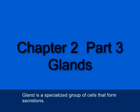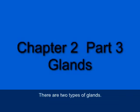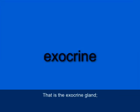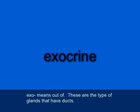A gland is a specialized group of cells that form secretions, and there are two types of glands. The first type, such as a sweat gland, secretes chemical substances into ducts that either lead to organs or out of the body. That's the exocrine gland — E-X-O-C-R-I-N-E. Exo means out of, and these are the type of glands that have ducts.